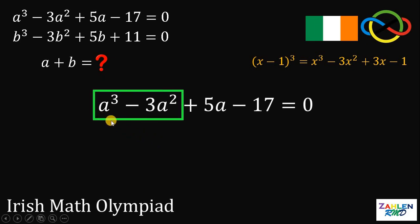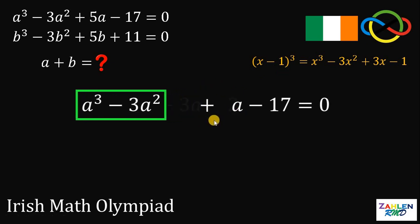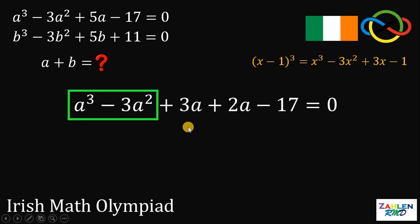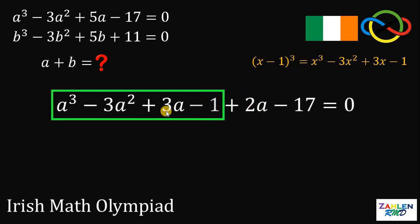Let's focus first on these two terms, A cubed minus 3A squared. This is similar to X cubed minus 3X squared. To use this identity, we need 3A and negative 1. So let's get 3A from 5A. Let's break this 5A into 3A plus 2A. Now we have 3A.